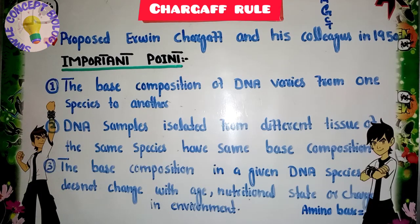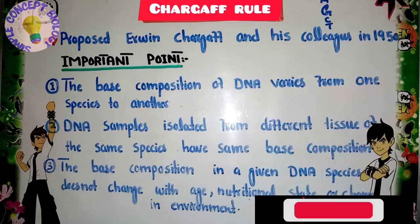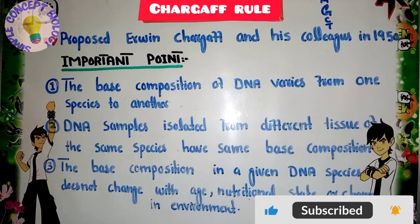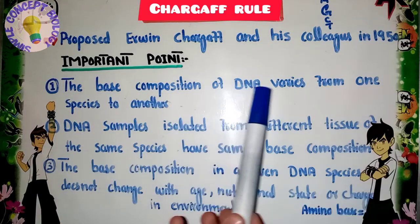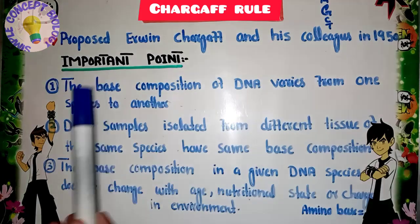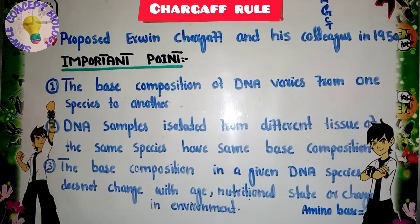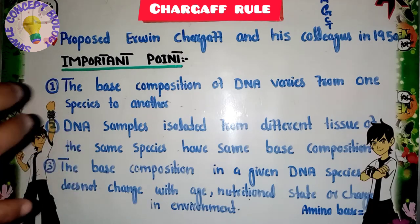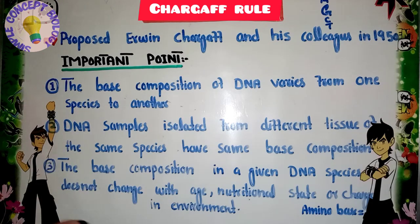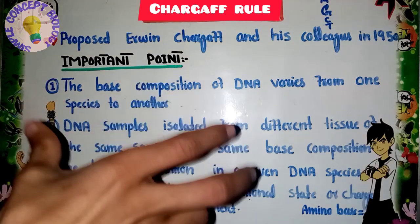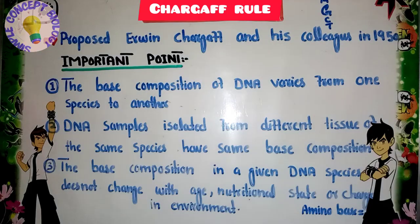Chargaff proposed four findings regarding these nitrogenous bases. The first finding is that the base composition of DNA varies from one species to another species — meaning the concentration of the four bases, adenine, guanine, cytosine, and thymine, differs from species to species.